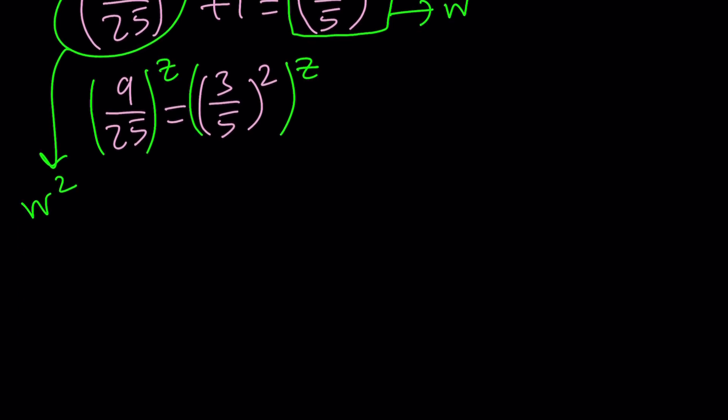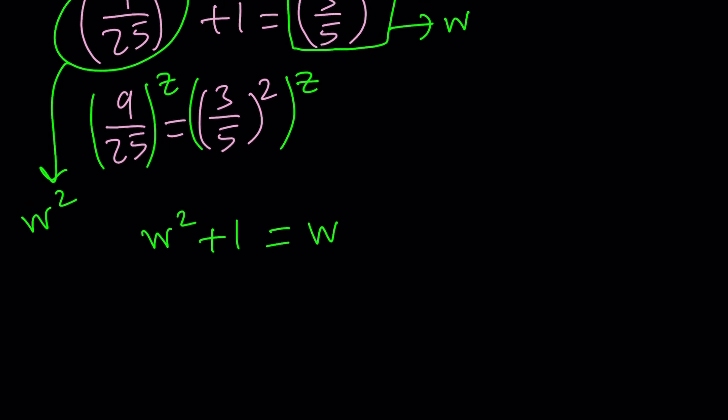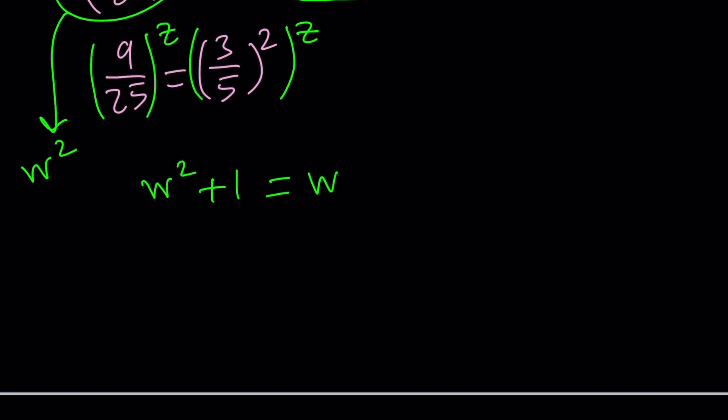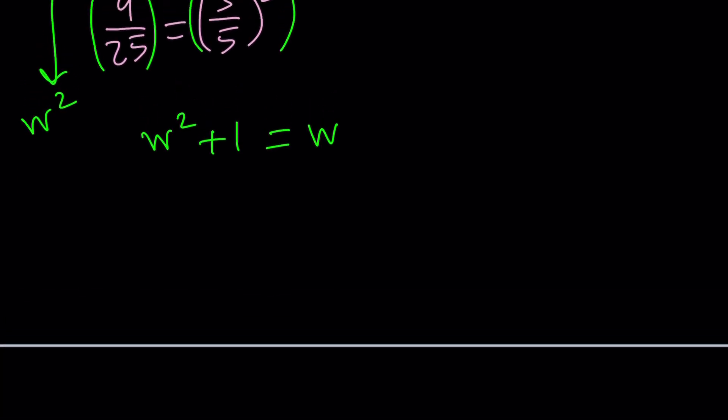So we get the following, W squared plus 1 equals W. This is not omega, it's W, okay? They're a little different. Now how do we solve this equation? It's quadratic. Come on. You see? You see the power of substitution and power of division and the shortcut that we kind of checked early on?